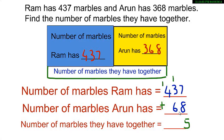So carry over 1 and write 0 below. 4 plus 3 is 7, and 7 plus 1 is 8. Therefore they have 805 marbles together.